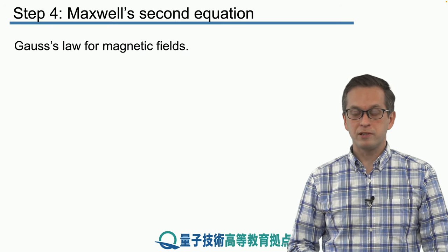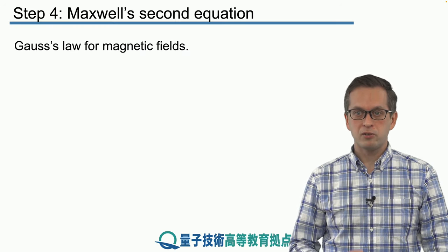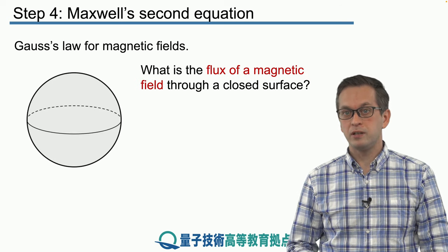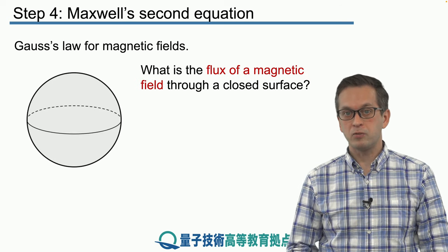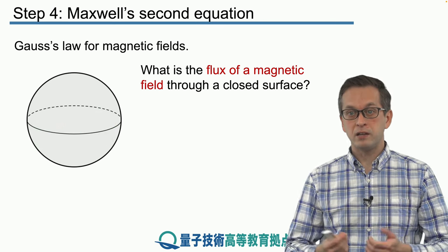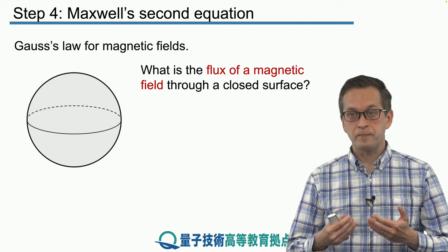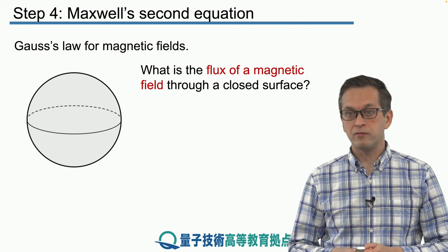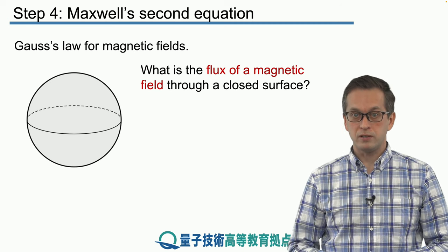So what's the Gauss's law for magnetic fields? Let's try to apply the same logic that we did in the case of an electric field. We're going to have some closed surface and we're going to consider a magnetic field going through this surface represented by some magnetic flux and we want to know what equation does it obey.